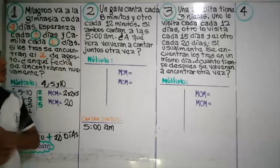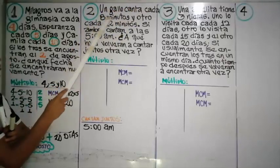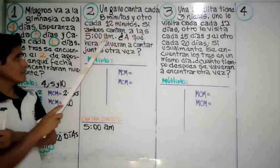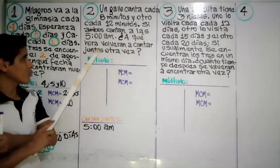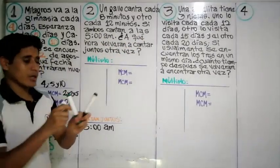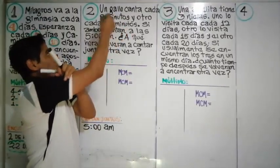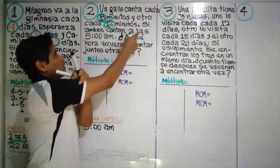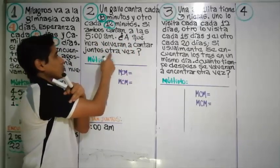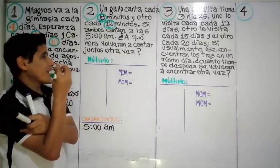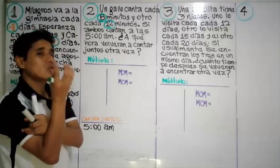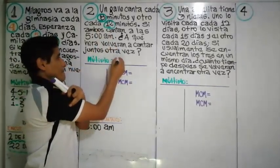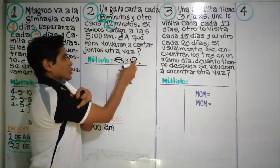Pregunta número dos: Un gallo canta cada ocho minutos y otro cada doce minutos, y cantan juntos a las cinco de la mañana. ¿A qué hora volverán a cantar juntos otra vez? Para saberlo, tenemos que hallar el mínimo común múltiplo de ocho y doce.